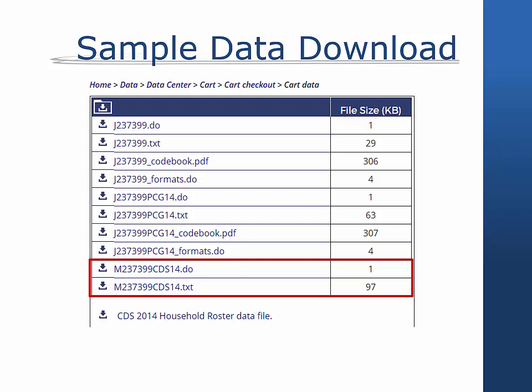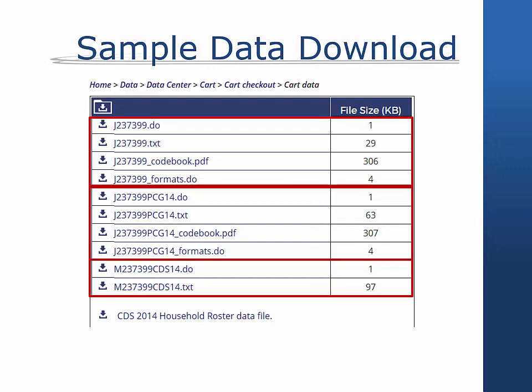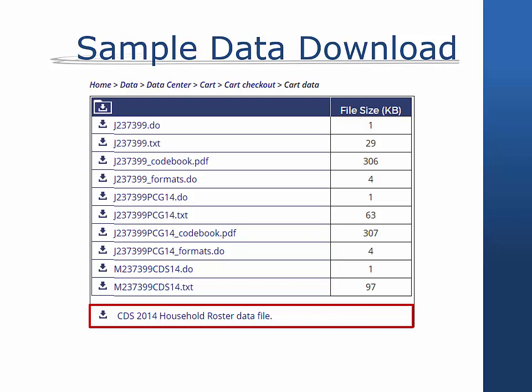The map file also serves a second purpose. Since the PCG household level variables are delivered on the separate data file and are identified at the PCG level, the CDS14 map is also used to merge the PCG 2014 data file together with the main data file that contains all other variables and is identified at the child level. All CDS 2014 data downloads are accompanied by the household roster data file that appears in a separate compressed zip file. The household roster file contains a separate record for every individual living in a CDS child's household at the time of the screening interview. This file may be used to obtain basic demographic information about all CDS household members and to identify the individual who is the child's primary caregiver. It also contains unique person identifiers to match each CDS household member to their individual level data in the PSID core.